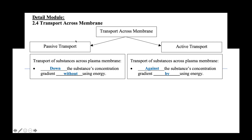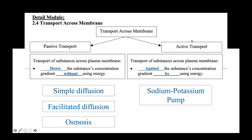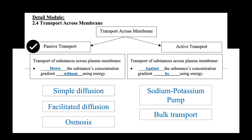There are three types of passive transport: simple diffusion, facilitated diffusion, and also osmosis. In active transport, you will learn about the sodium-potassium pump and also bulk transport. But for now, let's focus on passive transport first.